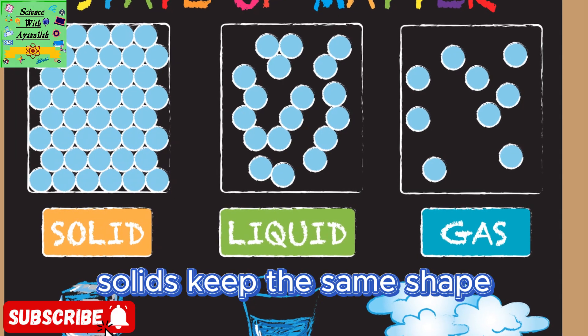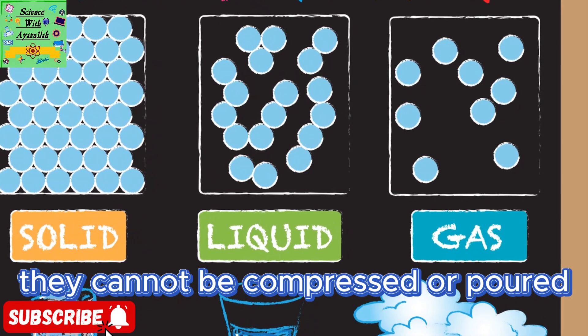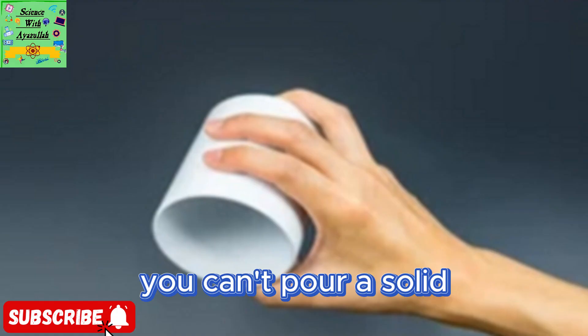Solids keep the same shape and take up the same amount of space. They cannot be compressed or poured. You can't pour a solid.